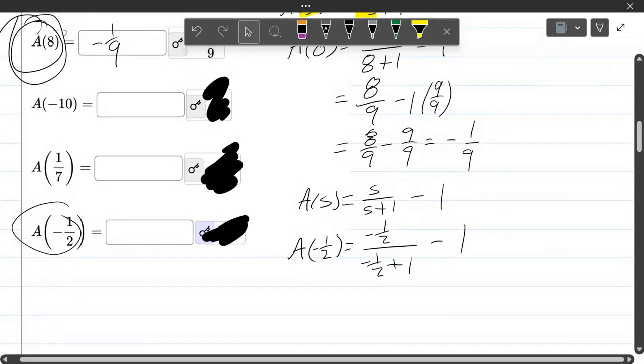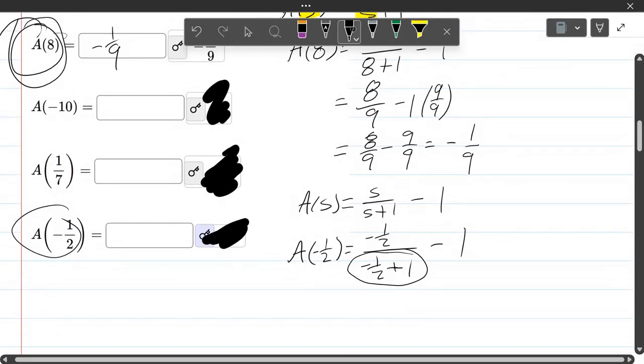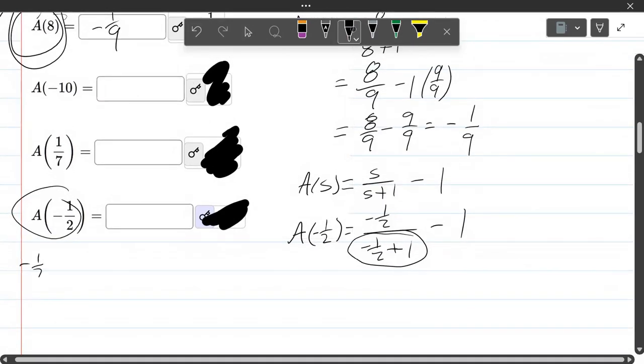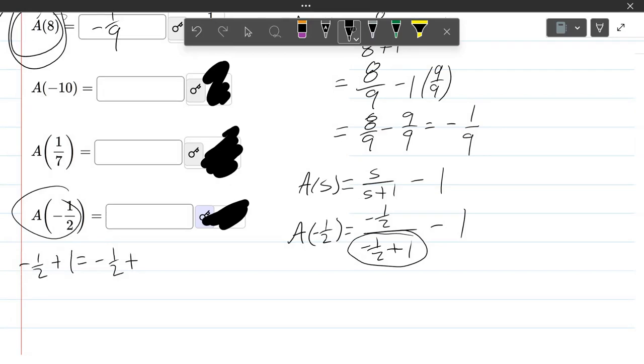So I need to simplify the denominator so I'm going to add those two fractions. I'll just do that right over here. Negative 1 half plus 1. Your 1 needs to be multiplied by 2 over 2 which 1 times 2 over 2 is 2 over 2. And now we have negative 1 over 2 plus 2 over 2. So negative 1 plus 2 is positive 1, 1 over 2. So our denominator, our entire denominator turns into positive 1 half.